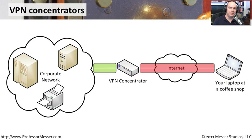VPN concentrators are becoming increasingly common. You can buy them now for your home office and use VPN software to connect back through an encrypted tunnel to your home office, where you can then print on your local printer even though you're somewhere else.